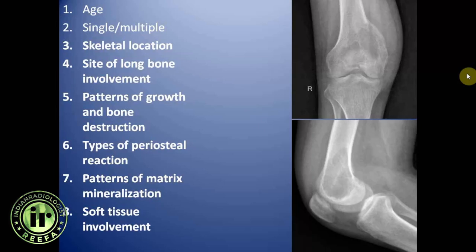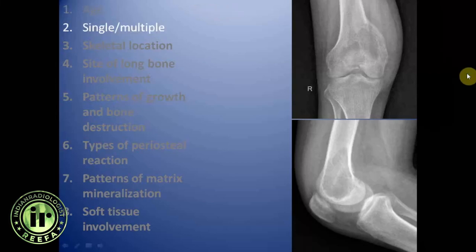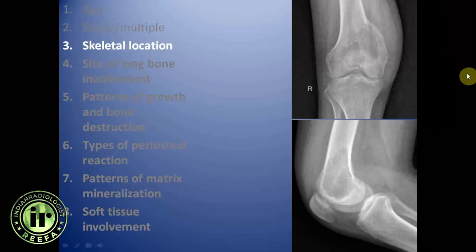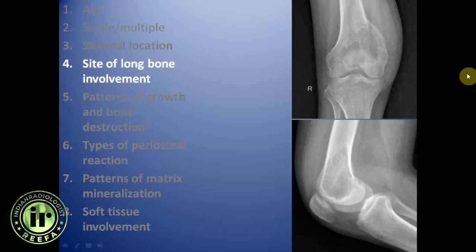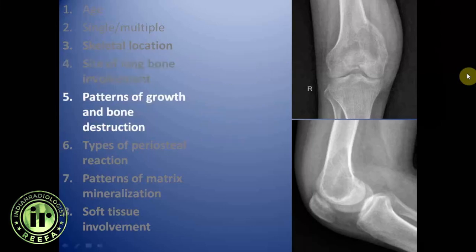Age of the patient is 21 years — a young female, but the physis are closed so she is skeletally mature. The lesion is single, involving the distal femur. Skeletal location is appendicular, involving a long bone. The site of long bone involvement is the epiphyseal and metaphyseal region of the distal femur. The lesion is eccentric, expansile, and reaches up to the subarticular region.